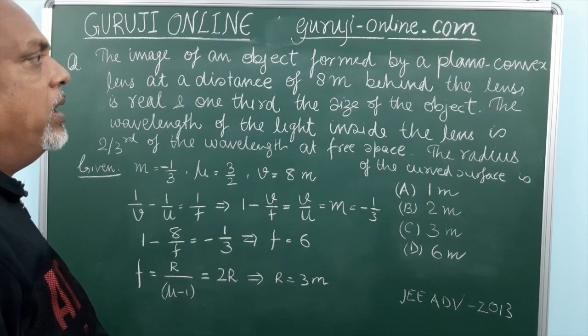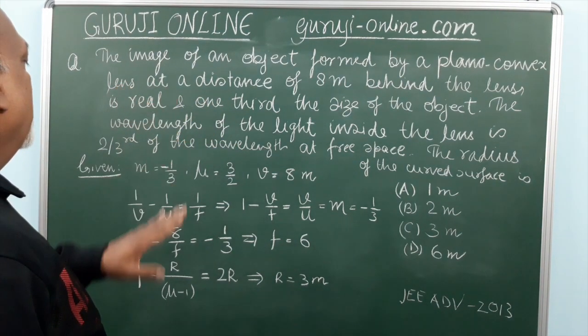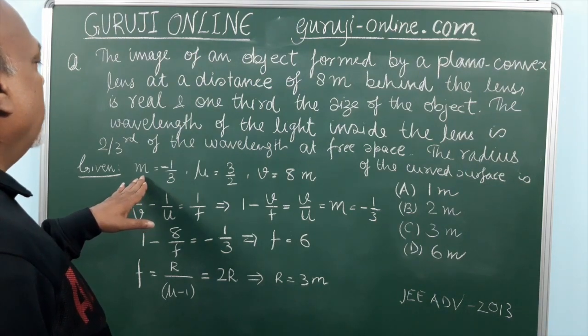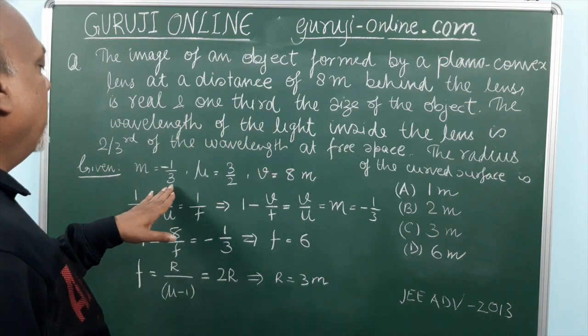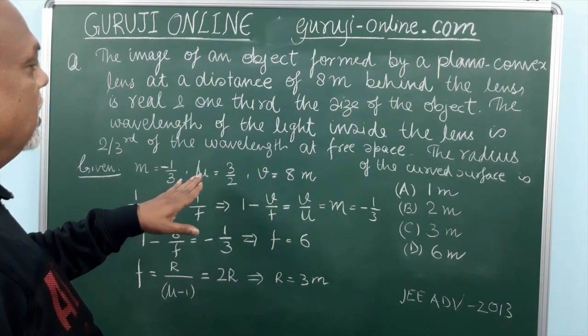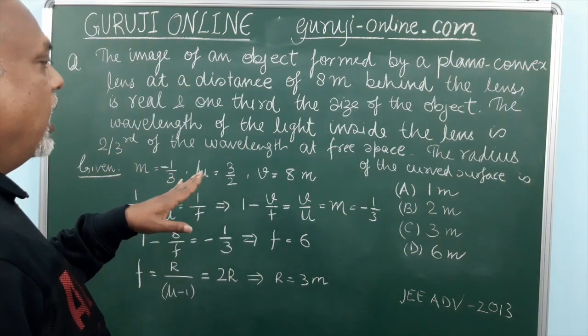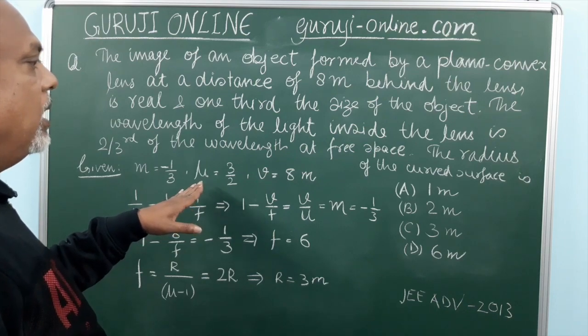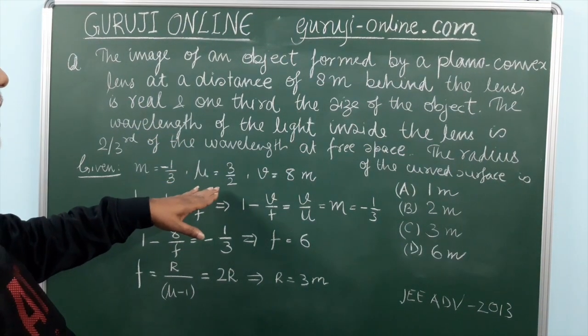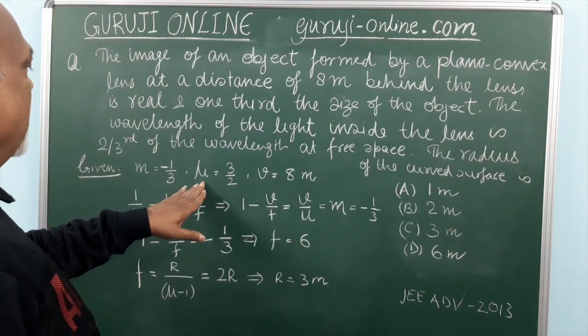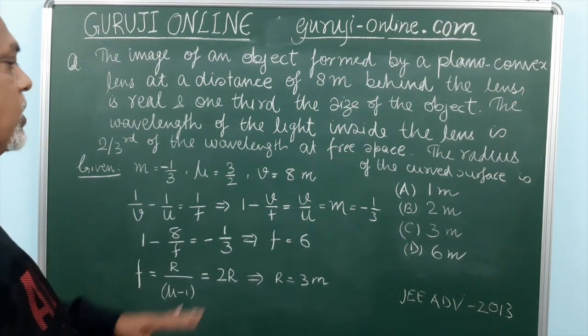So here what we are given is plano-convex lens and the distance of the image. So here this is the magnification. Here it is one third the size of the object. So magnification is minus 1 by 3 and since wavelength is given and it is 2 by third of the wavelength at free space. As you know refractive index, that is the ratio of the speed of light in the free space to the medium. So from this the refractive index will be 3 by 2 and image formed is 8 meter behind the lens. So V is 8 meter.